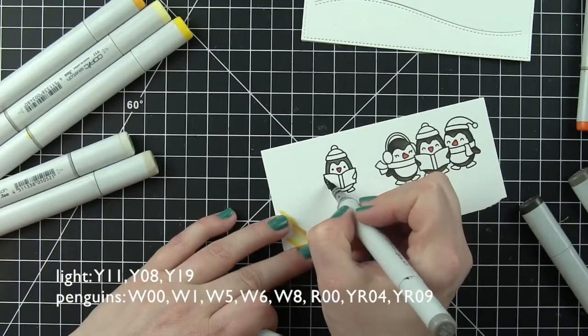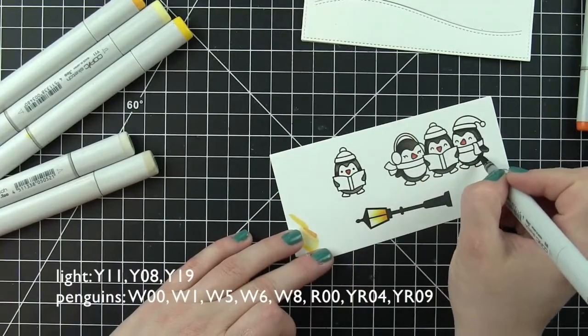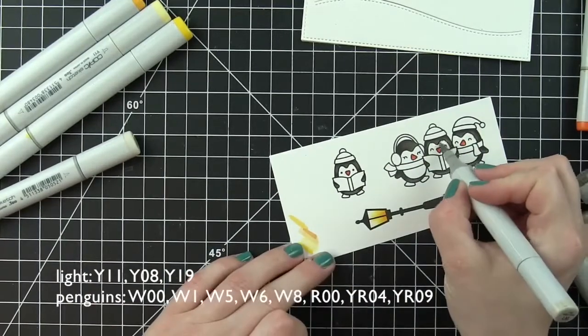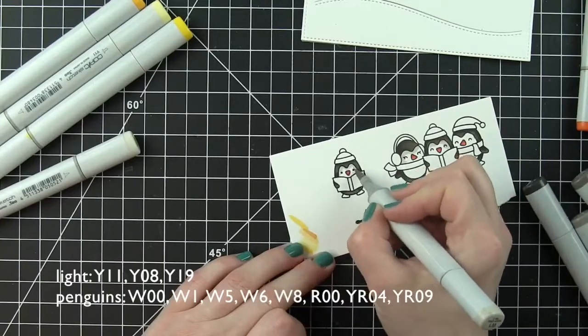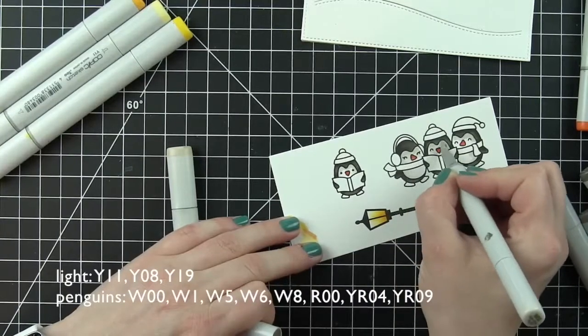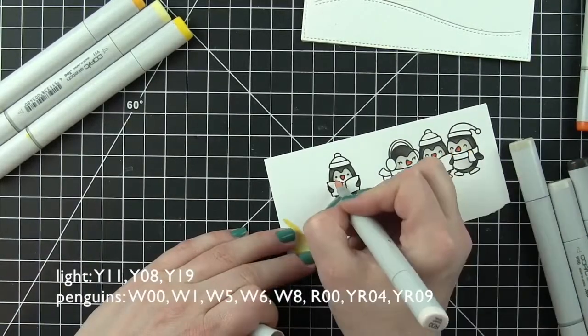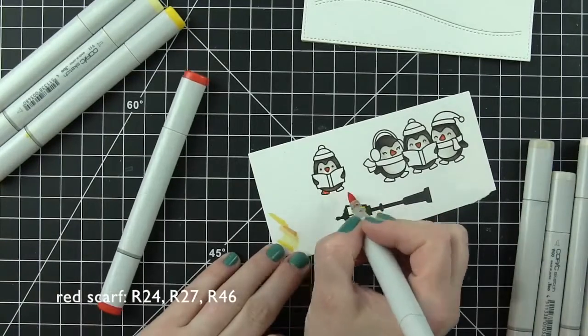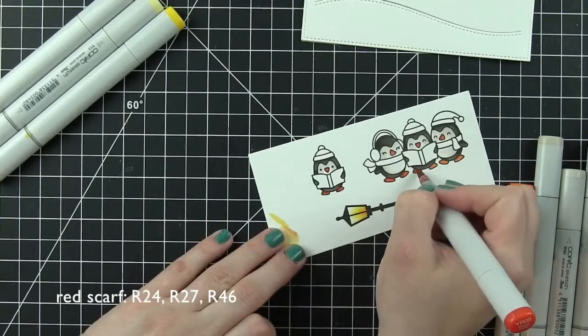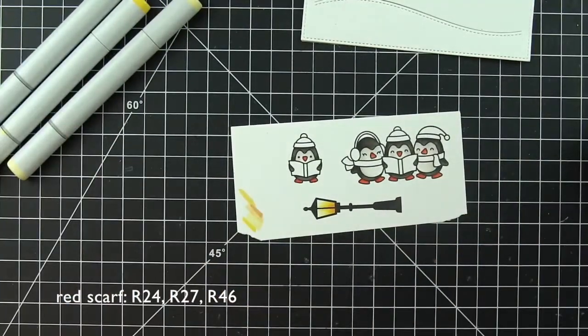For the penguins, to build up to the black shade, I am using warm gray markers to get that effect with warm gray five, six, and eight. For the lighter areas on the penguins, I'm using warm gray zero zero and one with a little R zero zero for the cheeks on the penguins to pinken them up. They're out in the cold after all, so I want their little cheeks to be nice and rosy. The penguins' feet and beaks are all in YR 04 and 09.